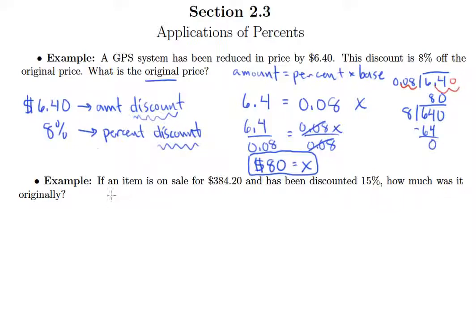Moving to this next example, it says if an item is on sale for $384.20 and has been discounted 15%, how much was it originally? So again, that word 'originally' indicates we're looking for the base. So we're going to have an amount equals a percent times our base. And the only amount we have to work with is $384.20, so I'm just going to put 384.2 here right now.